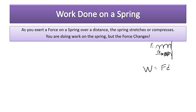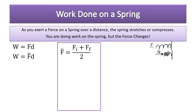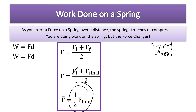Work is equal to F times D. What do we plug in here — zero or something else? We're going to use the average of the two forces. So W equals F times D, and we use the average. The average is the two numbers added together divided by two. Initially the force is zero because you're not pushing on the spring, and then you start pushing and the force increases. So the average force is the final force divided by two, or one-half times the final force.